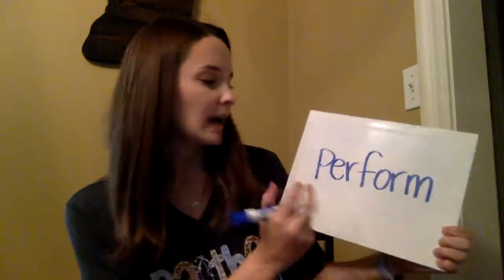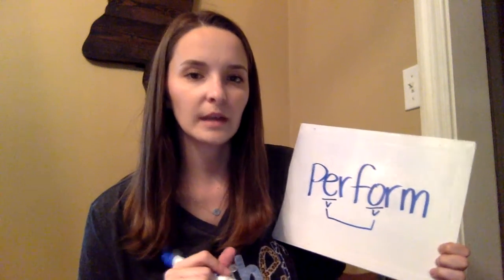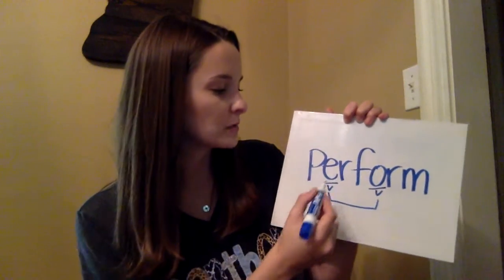Let's do another one together. The next word is 'perform.' Say this word out loud. We're going to start by identifying our vowels, which are E and O. Let's label them. Then the next step after labeling vowels is to draw your bridge. Then we're going to split it — let's clap it out: 'per-form.' We're going to split it between our two consonants, between the R and the F.